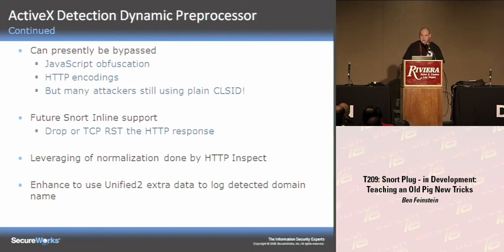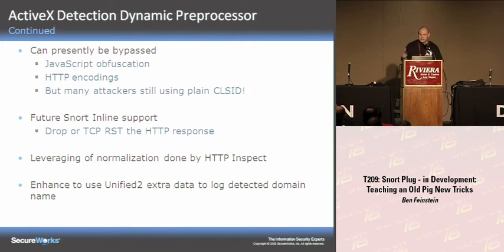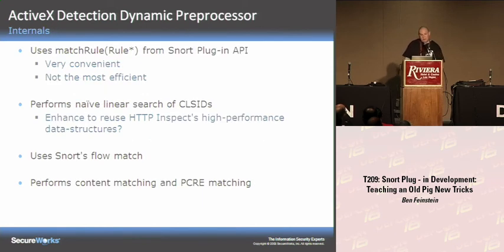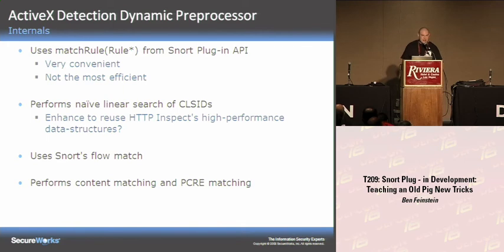You could probably evade this with some HTTP encodings using deflate. In the future I want to add Snort inline support so that when the plug-in detects an instantiation, it could drop the packet or send a reset. I also want to extend this to leverage the work HTTP inspect is doing, and to use the Unified2 output plug-in to write out more details about the ActiveX control. I took a shortcut implementing this using the match-rule function — it's convenient, though not the most space- and time-efficient approach. The code performs a naive linear search of class IDs, and I plan to leverage the trie-based data structures that HTTP inspect uses. It uses Snort's flow match to confirm it's a response from the server, plus content matching and PCRE matching.